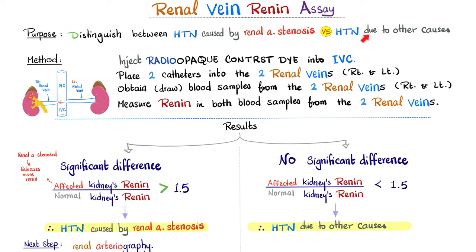The renal vein renin assay distinguishes hypertension caused by renal artery stenosis from other causes. To run the test, you inject radiopaque contrast dye into the inferior vena cava. Since the IVC connects to both renal veins, contrast flows to both sides. You then place catheters in the right and left renal veins and draw blood samples to measure renin from each kidney.